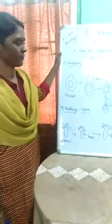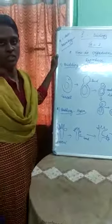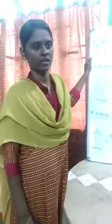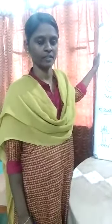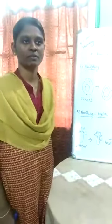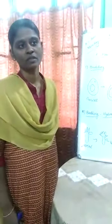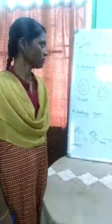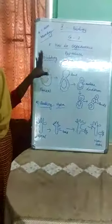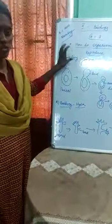Good morning students. In this revision class we are going to cover the chapter 'How do organisms reproduce?' We have already discussed the asexual method of reproduction — fission and fragmentation were completed in one class, and regeneration in another class. Today we are going to see budding alone, because this chapter is important and mentioned by the revision paper released by the board. There are more possibilities for 3-mark as well as 5-mark questions from this chapter, so we have to read all the questions thoroughly.